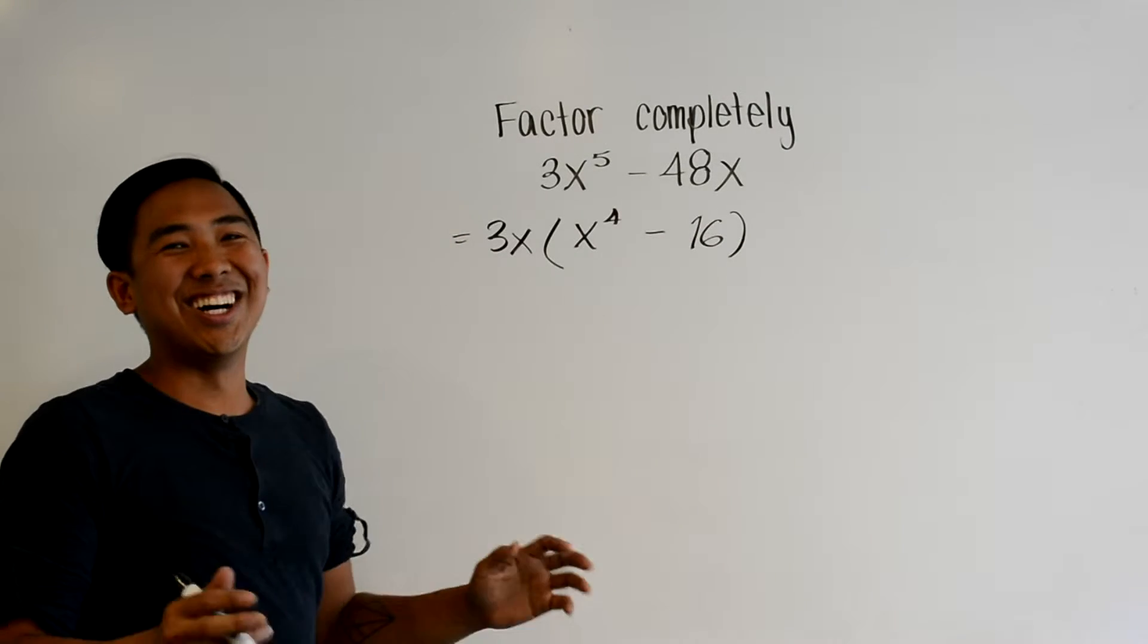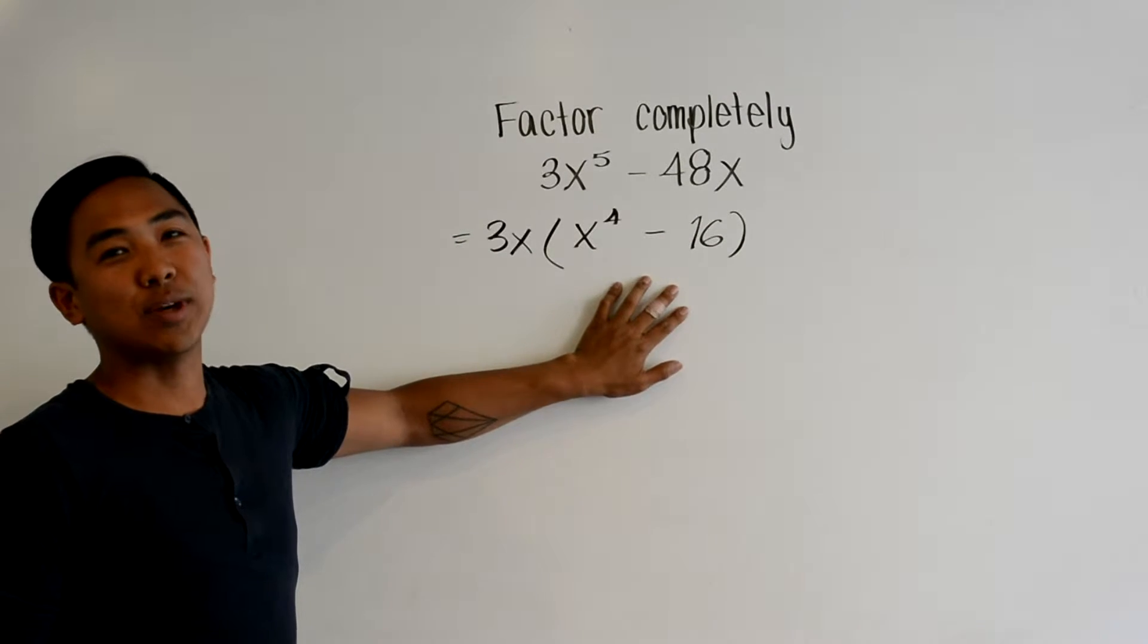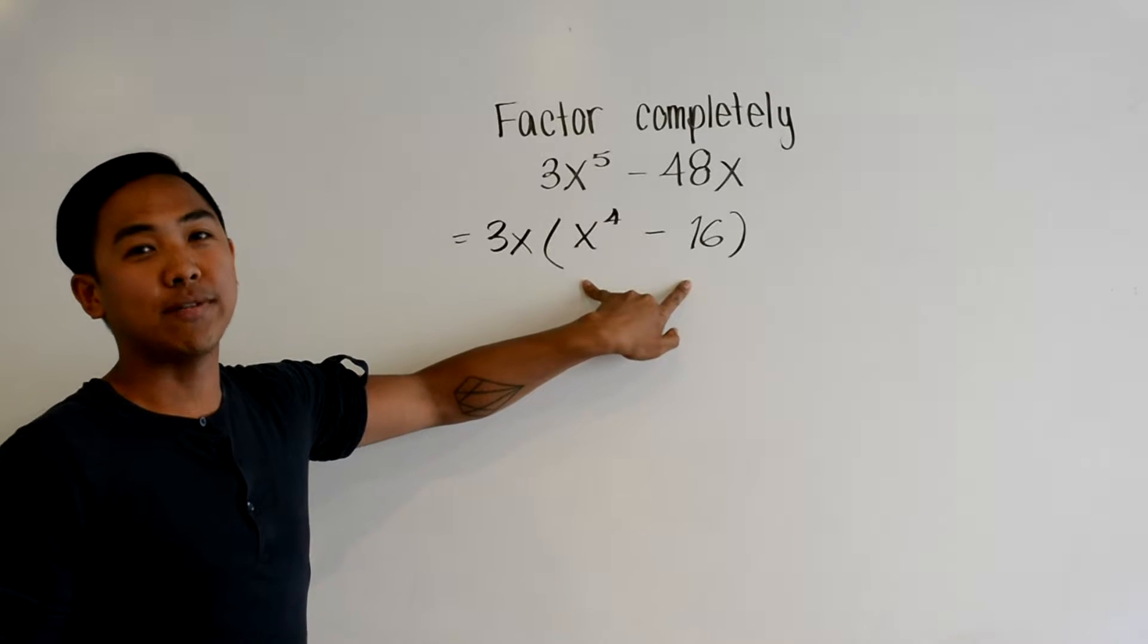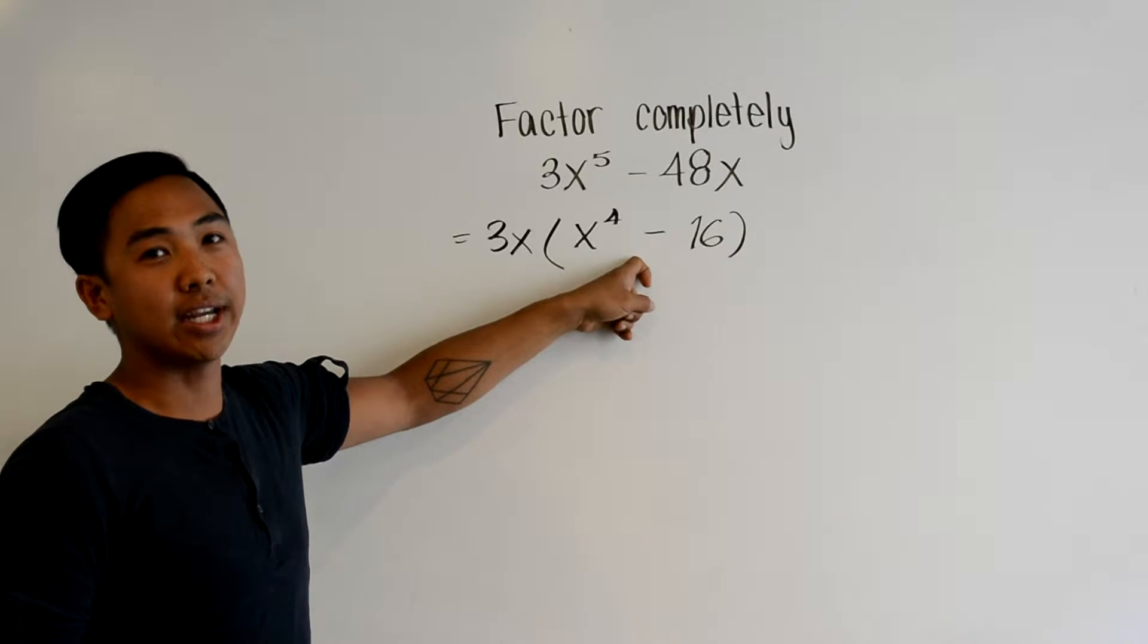Sweet, I'm done. Not yet. This is the difference of squares. So both of these are perfect squares and they're separated by a negative sign.